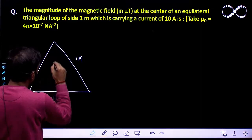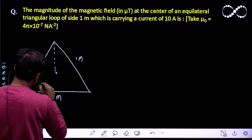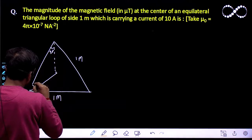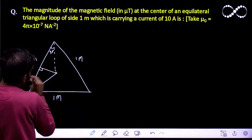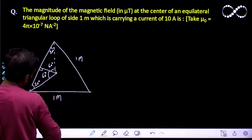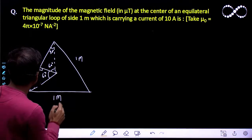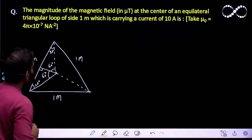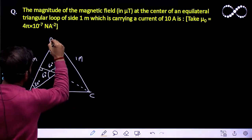Assume this is the centroid. If I join lines from here, this angle will be 30 degrees, and similarly this will also be equal to 30 degrees. If I drop the perpendicular here, this will be 60 degrees and this will also be 60 degrees. Now, this is BC and suppose this is A.